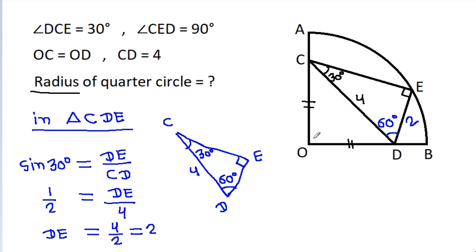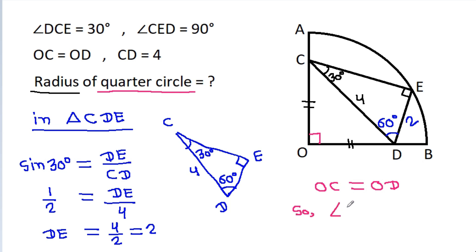OAB is a quarter circle, which means this angle will be 90 degrees. And here OC is equal to OD, which means angle OCD will be equal to angle ODC. Since angle OCD plus angle ODC equals 90 degrees, these two angles will each be 45 degrees.